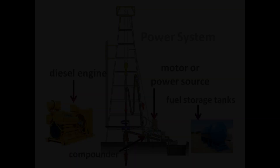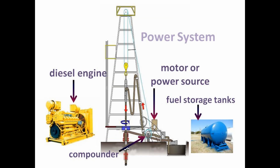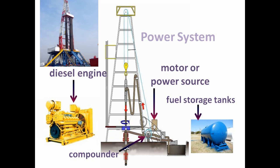The power system consists mainly of diesel engines that run electric motors, fuel storage tanks, a compounder made up of pulleys, belts, shafts, gears, and chains, and on some newer rigs, a silicon controlled rectifier, or SCR.